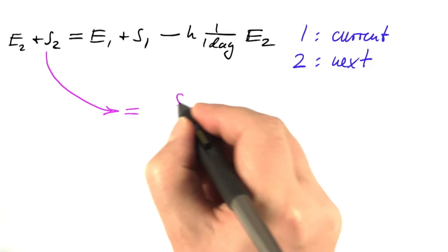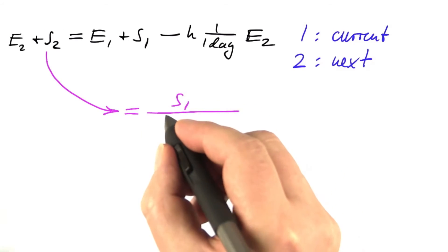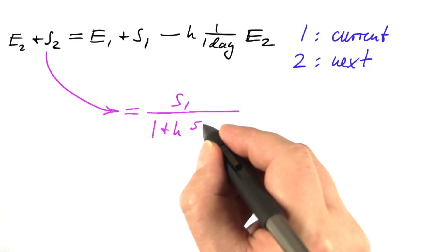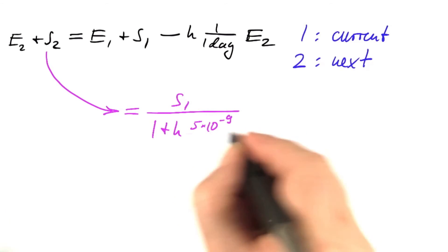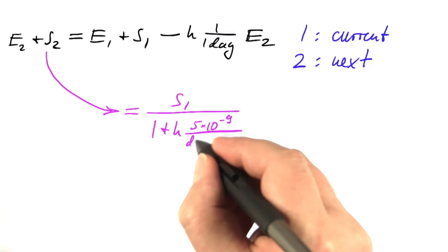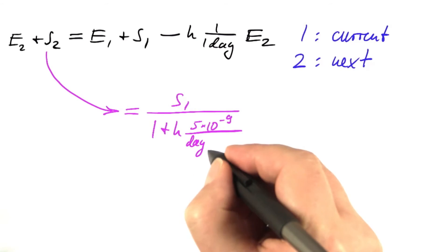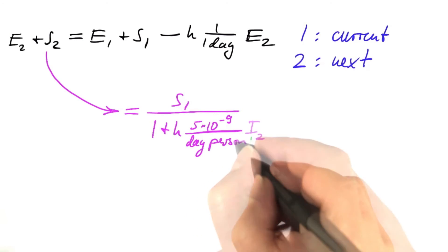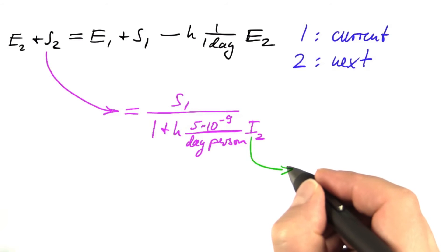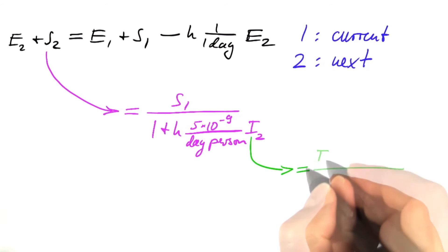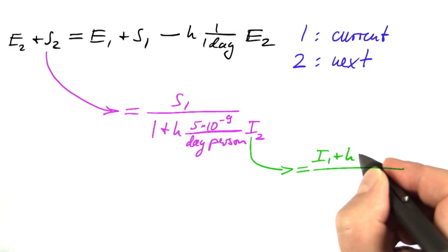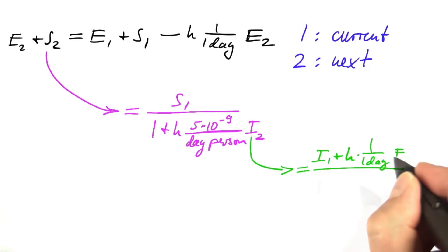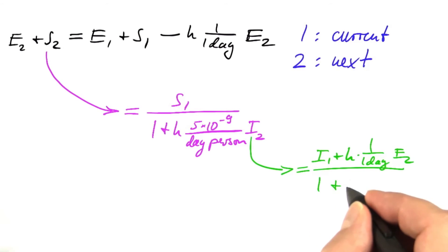Namely, s2 equals s1 divided by 1 plus the step size times 5 times 10 to the minus 9 divided by days and persons times i2. And we have an equation for i2 that says i2 equals i1 plus step size times 1 over 1 day, e2, divided by 1 plus step size times 1 over 5 days.